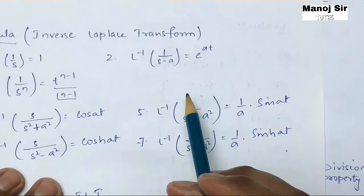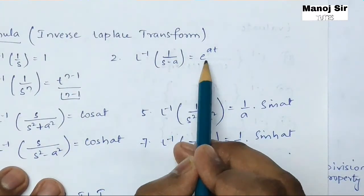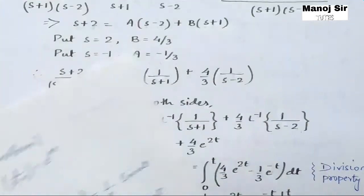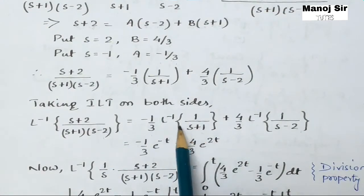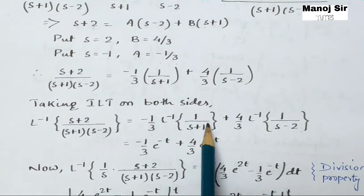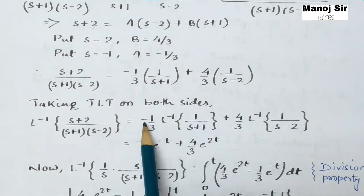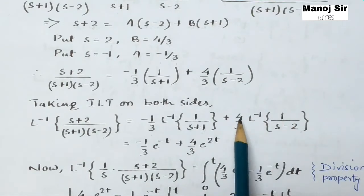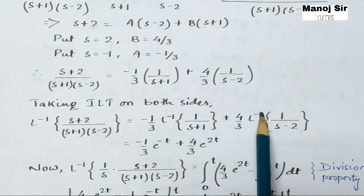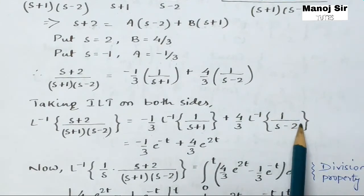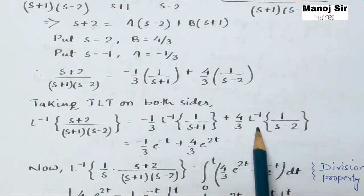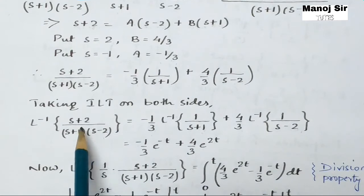Using the formula: L⁻¹{1/(s-a)} = e^(at). For 1/(s+1), a = -1, so the result is e^(-t). For 1/(s-2), a = 2, so the result is e^(2t). Therefore: L⁻¹{(s+2)/[(s+1)(s-2)]} = (-1/3)e^(-t) + (4/3)e^(2t). This is the inverse Laplace transform of the partial fraction part.